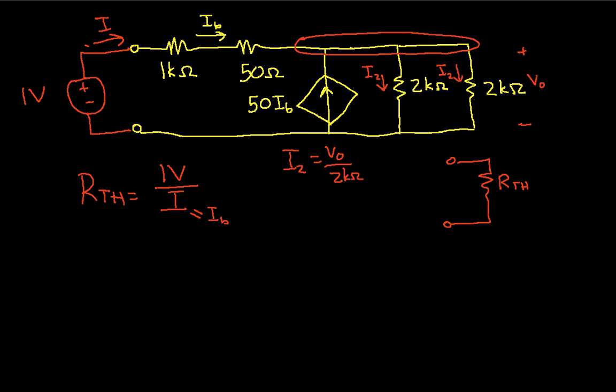So now, applying Kirchhoff's current law, we have the current coming in here is I sub B. The current coming in here is 50 I sub B. The current leaving is I2 plus I2. And we can then simplify this equation to 51 I sub B is equal to 2 times V0 over 2k ohms. This, we get this by substituting the V0 over 2k ohms into I sub 2 here and here.